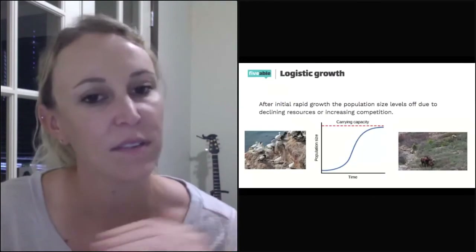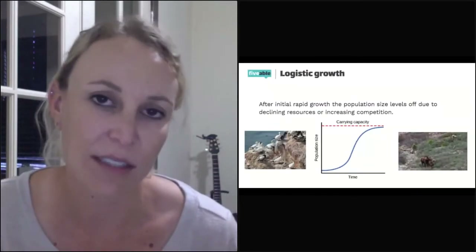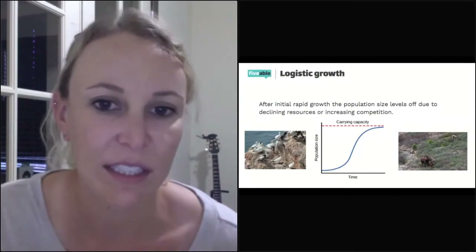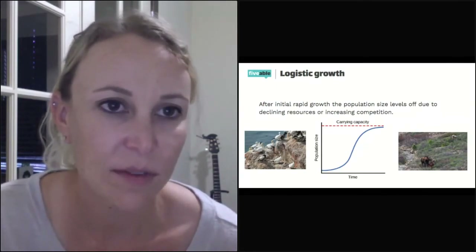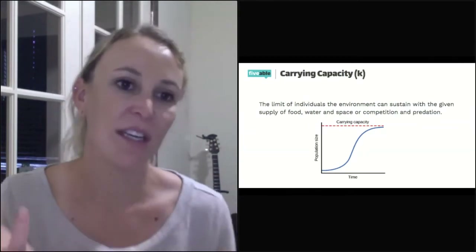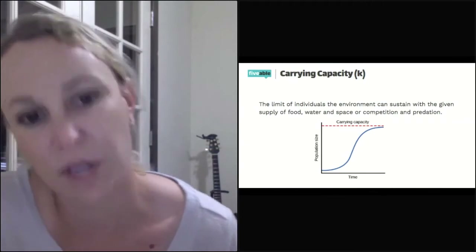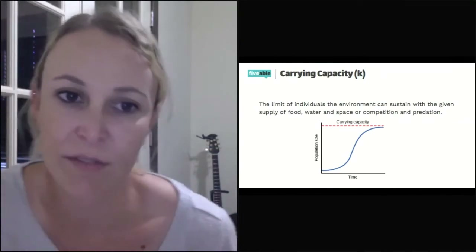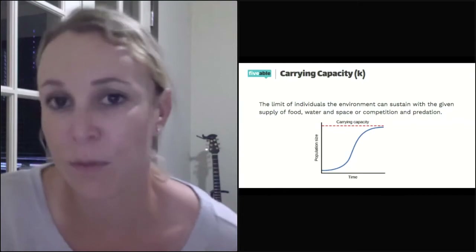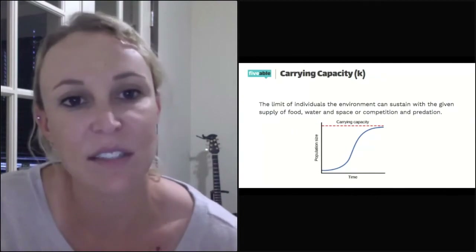Where the S-curve levels off and becomes flat — that's carrying capacity. The total number of animals or plants that an ecosystem can support is the carrying capacity. Carrying capacity is the limit of individuals the environment can sustain with a given supply of food, water, space, competition, and predation. Eventually animals or plants run out of these resources, and their numbers level off. Carrying capacity is denoted by the letter K.